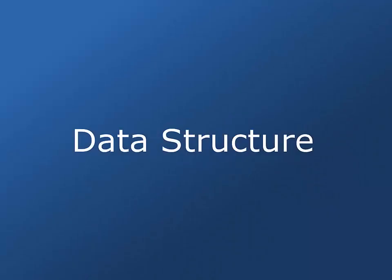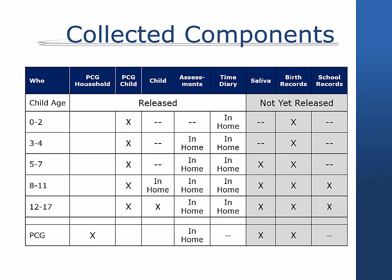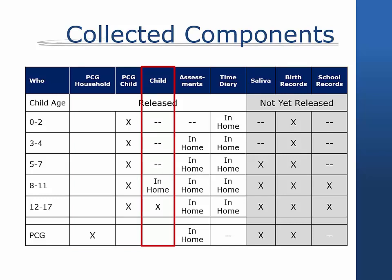With many components and several individuals being interviewed in each family unit, CDS 2014 has a unique data structure. Though there are eight possible components in CDS 2014, not everyone was eligible for each component, nor were they required to complete any one component. All primary caregivers were eligible to complete a single PCG household interview and a separate PCG child interview for each of their children. Children's eligibility to complete their own child interview depended on their age and whether their family was selected for the in-home supplement. Assessments and time diaries were collected for those in the in-home supplement, where assessments were obtained for those three and older, including primary caregivers, and time diaries were collected for all children.